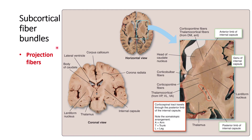The third type is called projection fibers, which connect the cortex of the brain with other parts of the brain. In this coronal section, you can see the cortex and the white fibers. One projection fiber is called the corona radiata, and another is called the internal capsule, visible on each side.